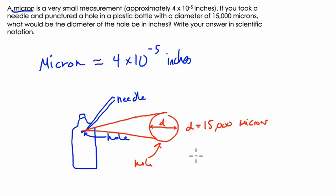So it's 15,000 microns, and what they're telling us basically is that if you have 15,000 microns and each micron is 4 times 10 to the negative 5th inches, we can find the total measurement in inches by multiplying.